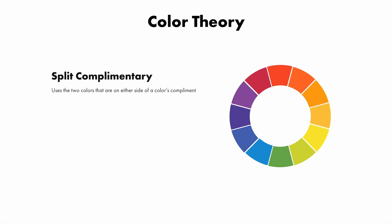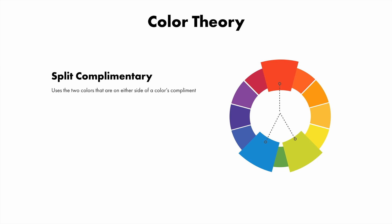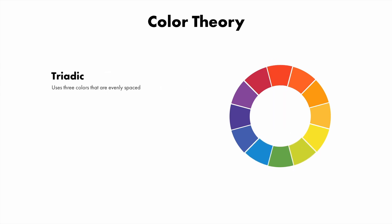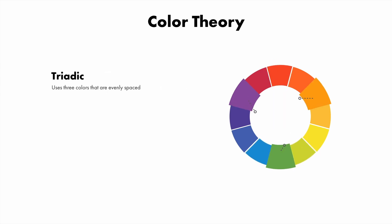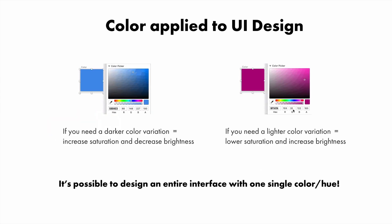Split complementary color schemes use two colors that are on either side of its complement. A triadic color scheme uses three colors that are evenly spaced and form a triangle on the color wheel.